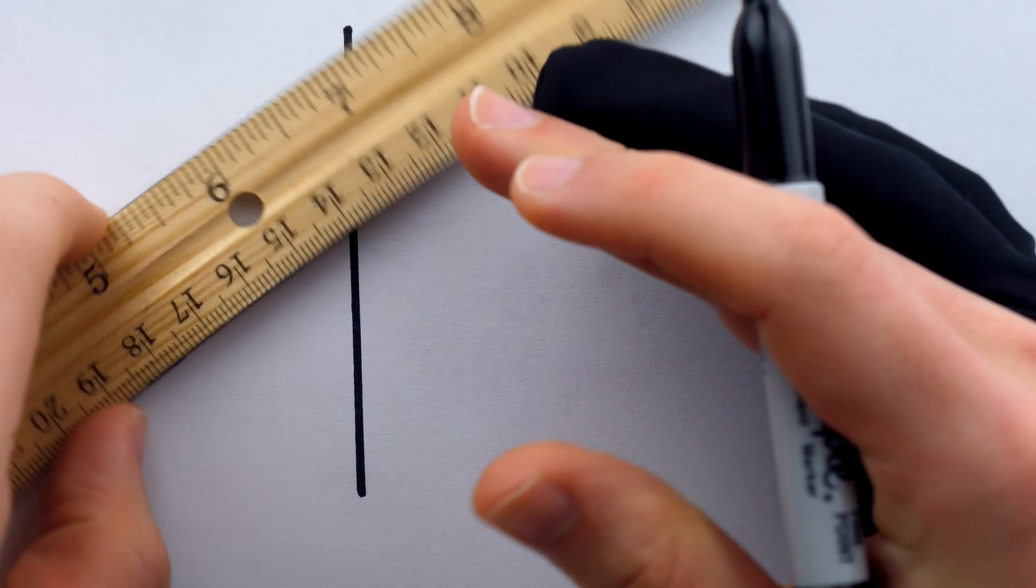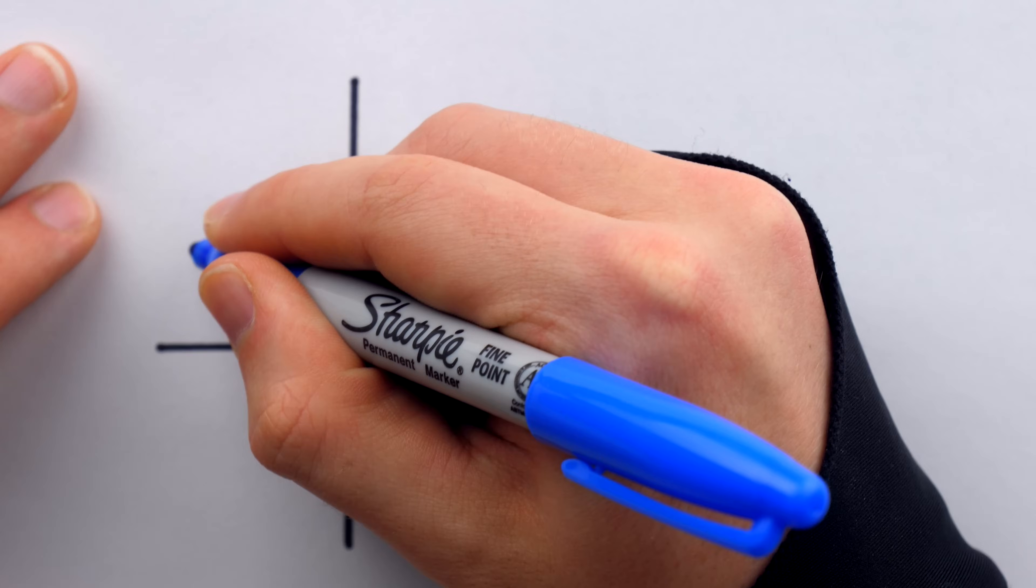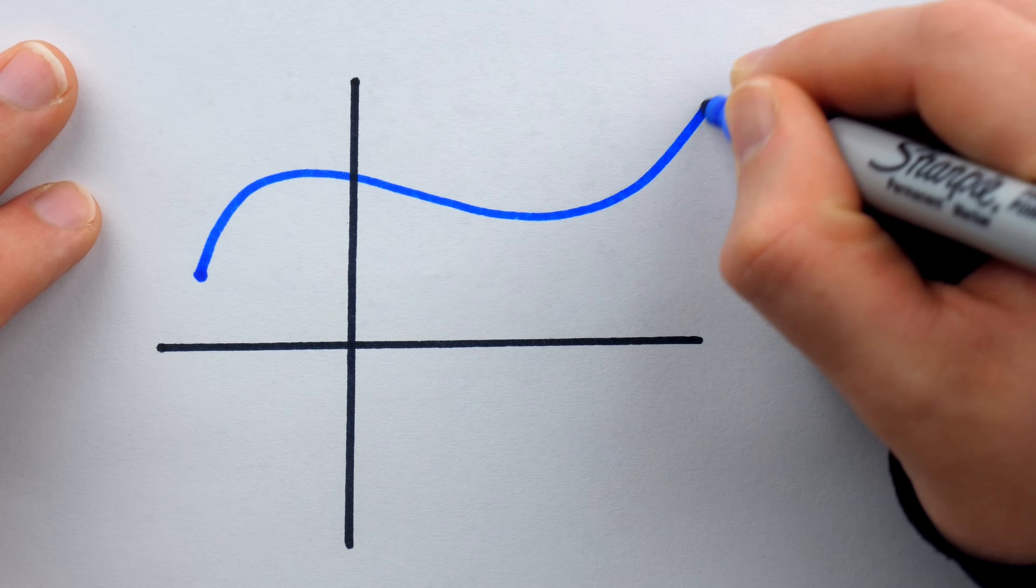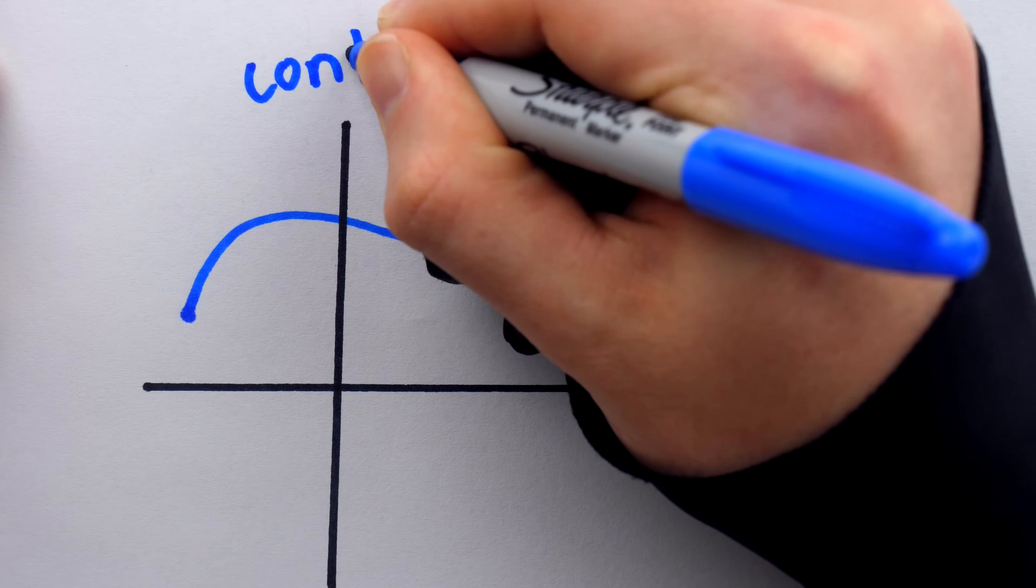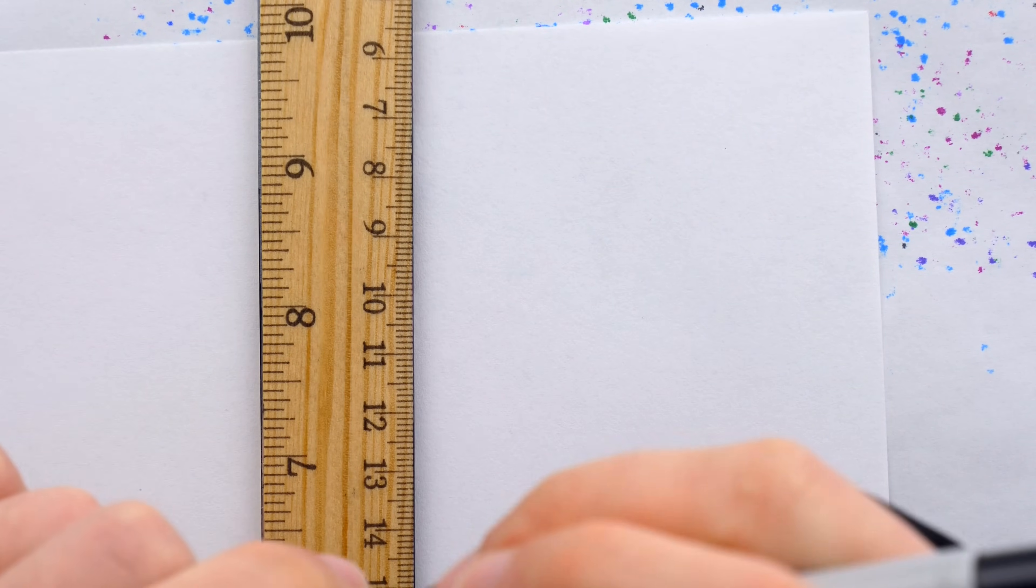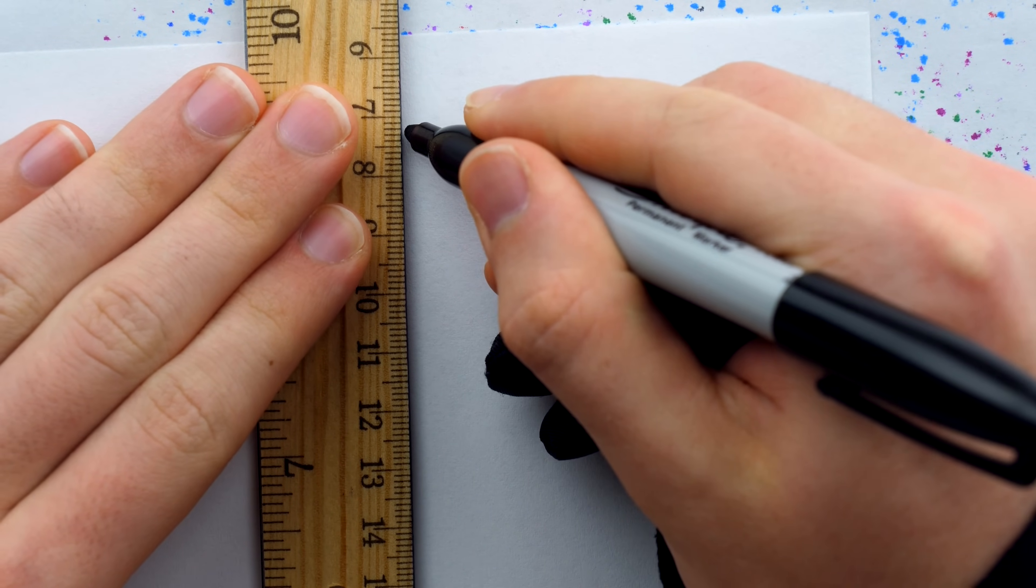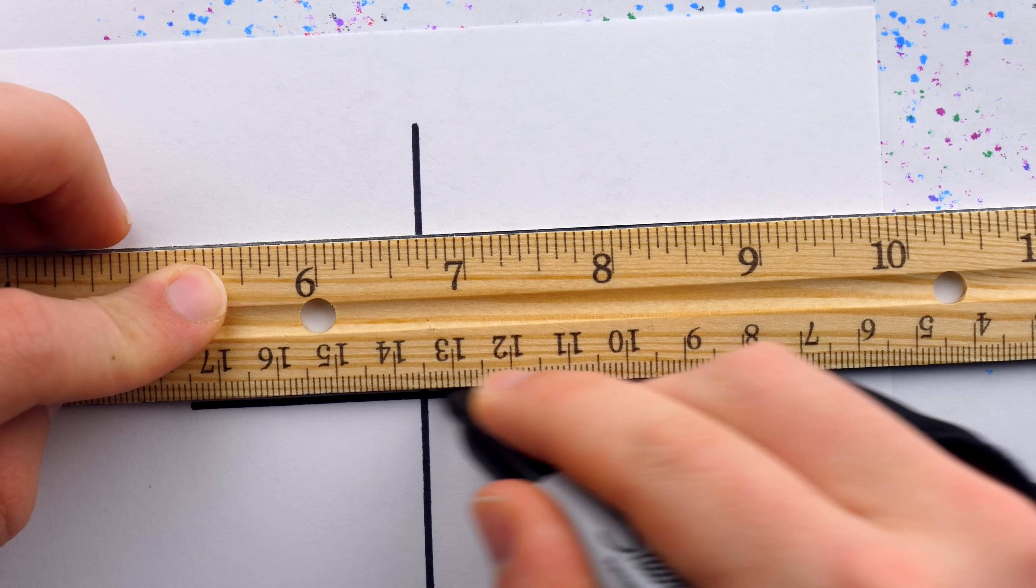When you first learn about functions, you learn about what we would generally consider to be very nice, well-behaved functions. You learn about lines, and slightly more complicated functions too. But a function just takes an input and assigns to it exactly one output. This is an example of what we would call a continuous function. That means it has no breaks or holes or jumps or gaps.